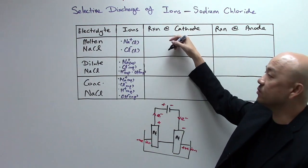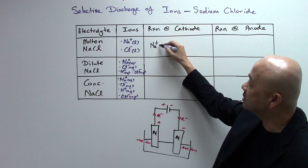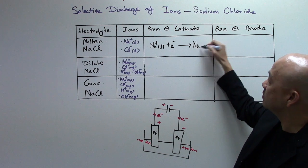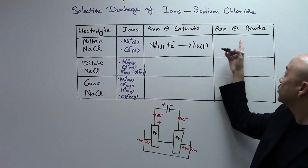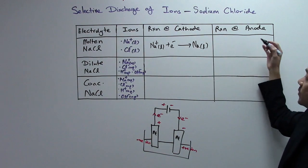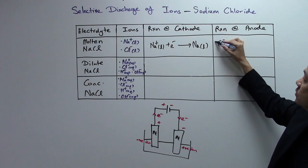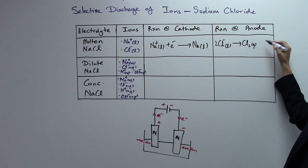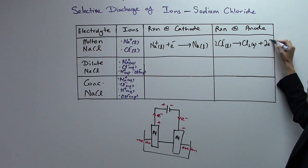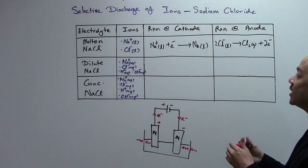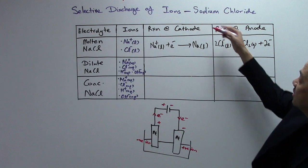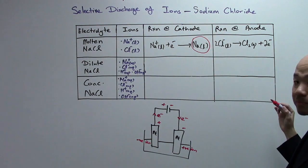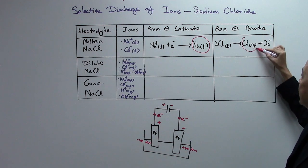At the cathode, the cations will be attracted to it. So Na+ molten will take in electron, you'll get reduced to become molten sodium, whereby at the anode side, it will be your anions, so it's Cl- molten, two of them will get oxidized to become chlorine gas by giving out two electrons. So you know who are the main products that are produced. For molten sodium chloride, at the cathode, it will be your molten sodium metal, at the anode, it will be your chlorine gas.